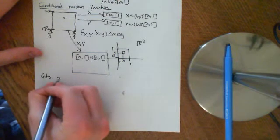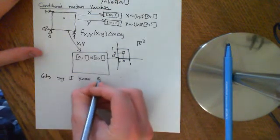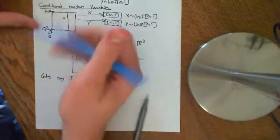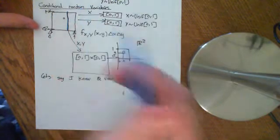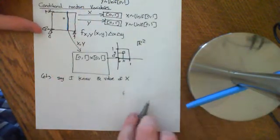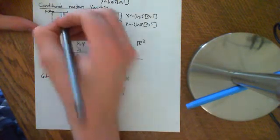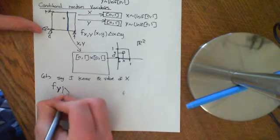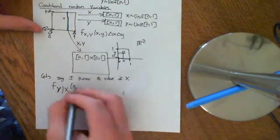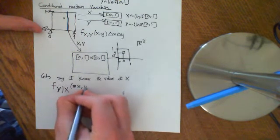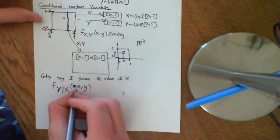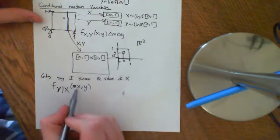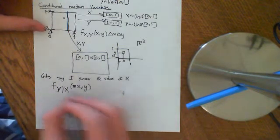Say I know the value of big X — I know what x-coordinate I am. So I know that I'm on this vertical line where big X equals a certain value; that's a fixed event. I now want to ask: what is the PDF of Y given that I am on this line x? That is, what is the probability density function for my value y, given that I know my value of x? This is the conditional PDF.